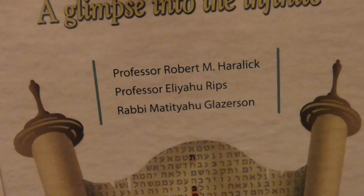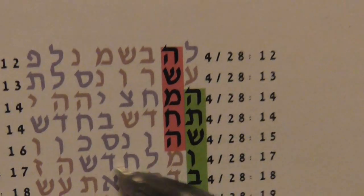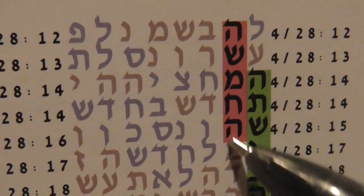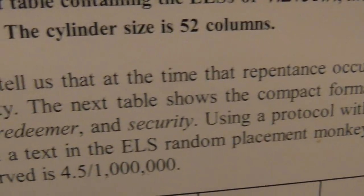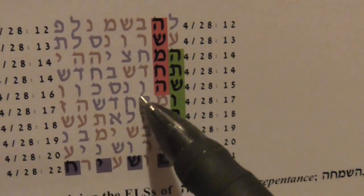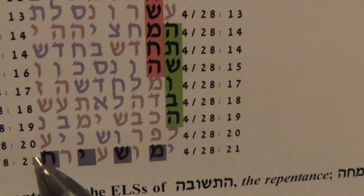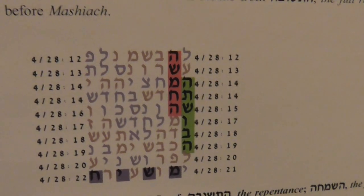Let us see a very interesting table which we wrote in our book, where in the same place there are many words connecting to the subject. You have here Atshuva — Repentance — and together next to it, HaSimcha and Mashiach, quite in a small area. Statistically, Professor Aralik found it to be quite significant: 4.5 to 1 million. Atshuva is a condition for Mashiach, and both Mashiach and Atshuva are minimal there — very interesting and significant.